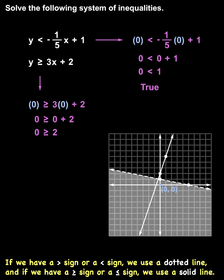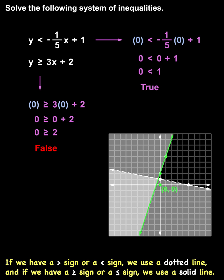Notice that 0 is greater than or equal to 2 is a false statement. This means that our test point (0, 0) is not a solution to the inequality, so we shade away from (0, 0) along our second boundary line.